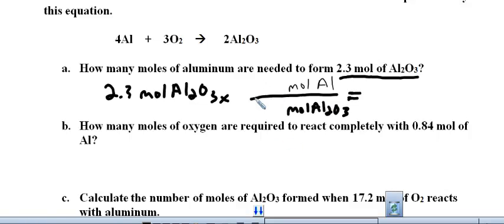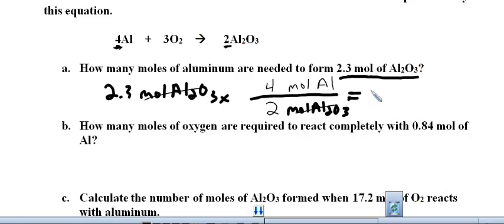What this is called is a mole ratio — that's why this whole thing is called mole ratios. This mole ratio is going to come from a balanced equation. So for every 4 moles of aluminum, I make 2 moles of aluminum oxide. Every time I use a mole ratio in stoichiometry, I need to look at my balanced equation. So I have 4 moles of aluminum for every 2 moles of aluminum oxide. These cancel out, and I end up with moles of aluminum. I get 4.6 moles of aluminum.